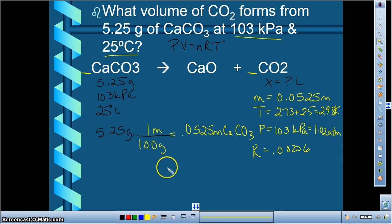So our pressure is 1.02 atm. We want to know volume, our number of moles, 0.0525 moles. Our R value is 0.08206, and our temperature is 298 Kelvin. So we solve for V in this case. You put that in your calculator, and you should get 1.07 liters for your final answer.